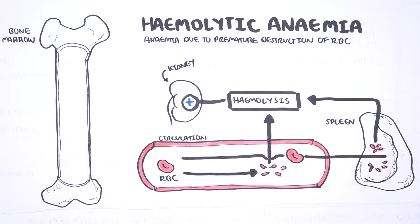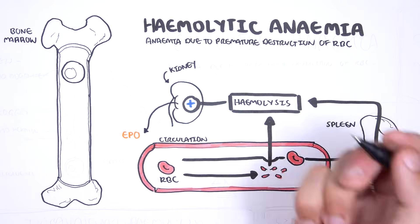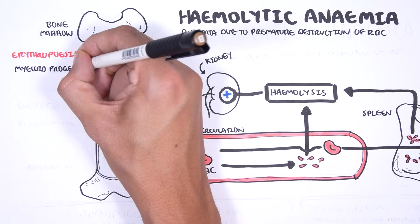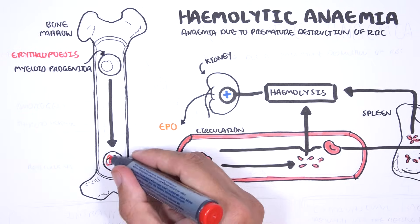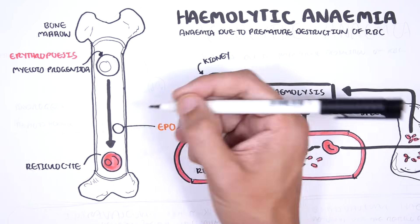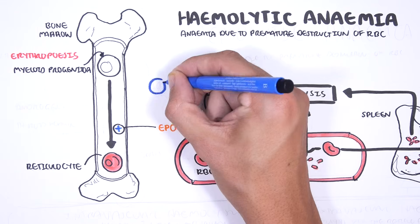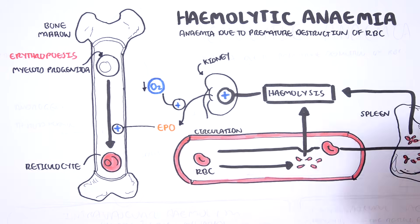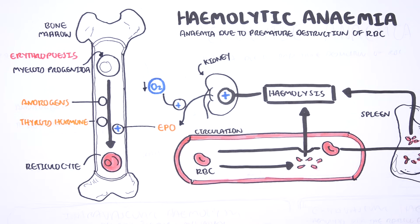Hemolysis stimulates the kidneys to produce erythropoietin, a hormone which stimulates erythropoiesis — the production of red blood cells. Red blood cells are produced from the myeloid progenitor cell line to become reticulocytes in the bone marrow. Erythropoietin, or EPO, stimulates erythropoiesis, and its release can be triggered by decreased levels of oxygen to tissues. Erythropoiesis is also stimulated by other hormones, including androgens and thyroid hormone.